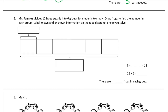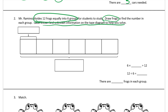Number two. Mr. Ramirez divides twelve frogs equally into six groups for students to study. Draw frogs to find the number in each group. I'm not going to draw frogs — I'm just going to make circles or X's or boxes. This has to be something you can count to find the number in each group. Label known and unknown information on the tape diagram to help you solve. I'll draw the frogs: there are twelve frogs and we need equal numbers in each of the six groups.